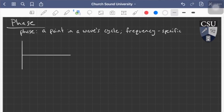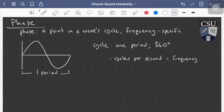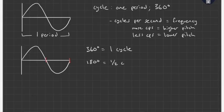Let me draw a wave for us. What is a cycle? A cycle is formally one period — one oscillation. We've got this wave, and this is one cycle, one period, 360 degrees. Cycles per second is actually our frequency. The more cycles we have in a single second means a higher pitch. The fewer cycles per second, the lower the pitch. The end of one complete cycle is 360 degrees.